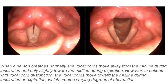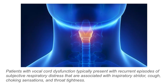When a person breathes normally, the vocal cords move away from the midline during inspiration and only slightly towards the midline during expiration. However, in patients with vocal cord dysfunction, the vocal cords move towards the midline during inspiration or expiration, which creates varying degrees of obstruction. Patients with vocal cord dysfunction typically present with recurrent episodes of subjective respiratory distress associated with inspiratory stridor, cough, choking sensations, and throat tightness.